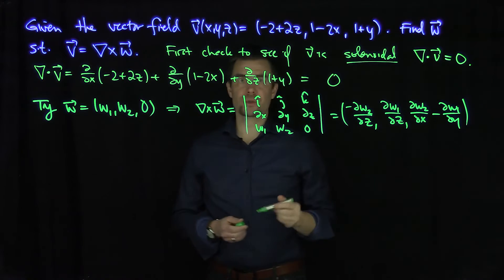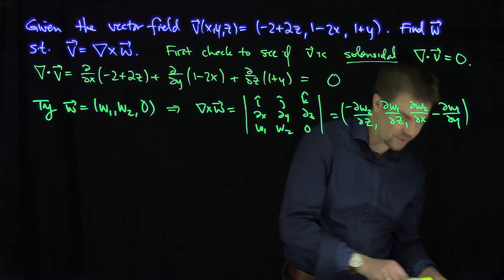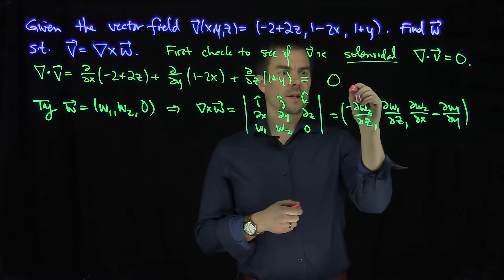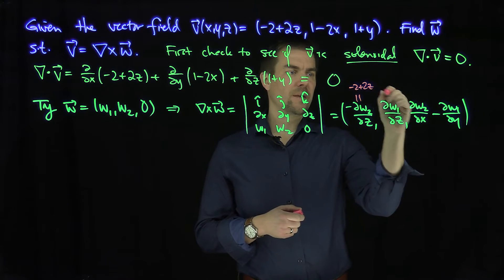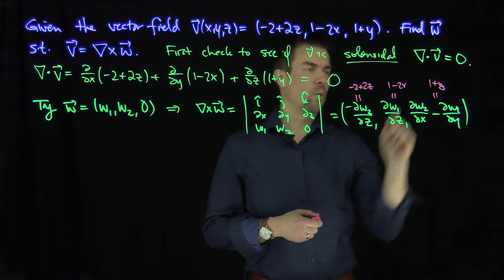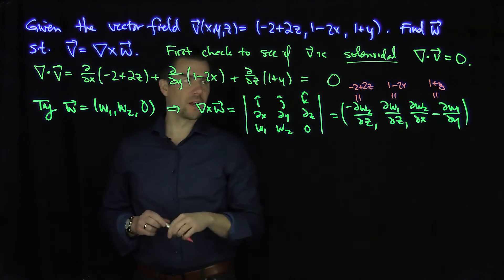So I need a couple things to be true. If this vector field is going to have this as its curl, then I need this term over here to be negative 2 plus 2z. I need this term over here to be 1 minus 2x. I need this term over here to be 1 plus y. So let's see how we can cook that up.